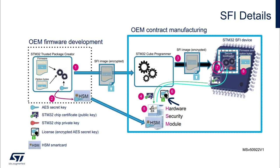The STM32 can then retrieve the AES secret key and proceed in Step 8 with the firmware installation and Option Bytes programming. As described in more detail in the following section, the Secure Bootloader is a standard ST bootloader with additional security features. The implementation of the Secure Bootloader makes use of STM32 security features to prevent access to user flash memory or SRAM.